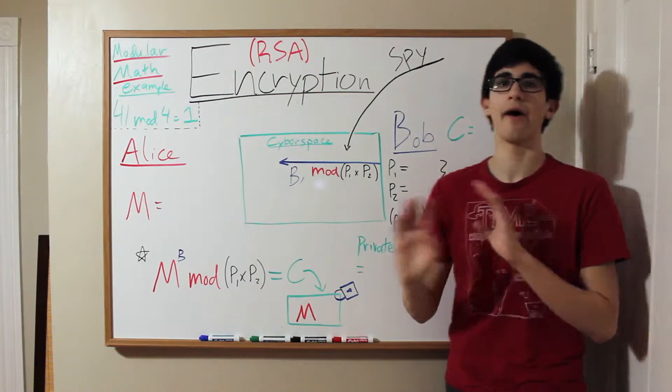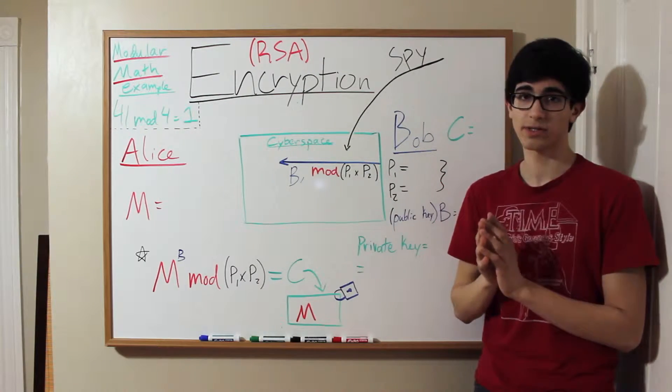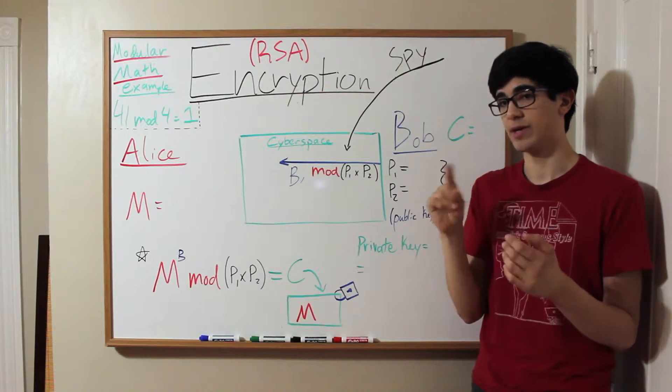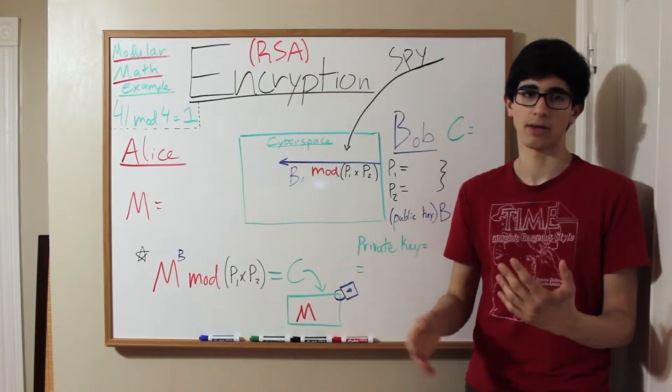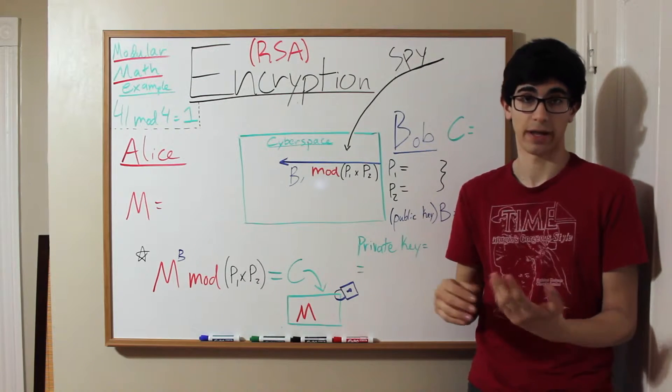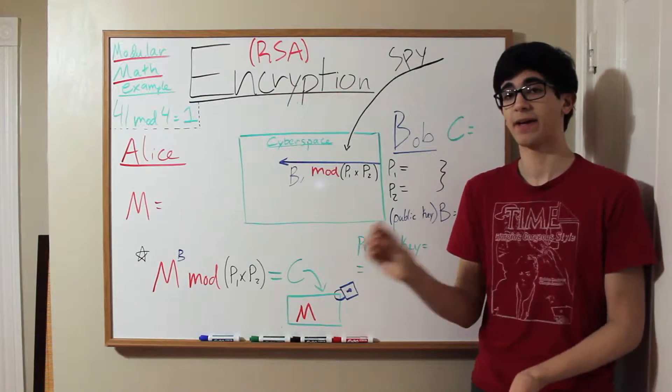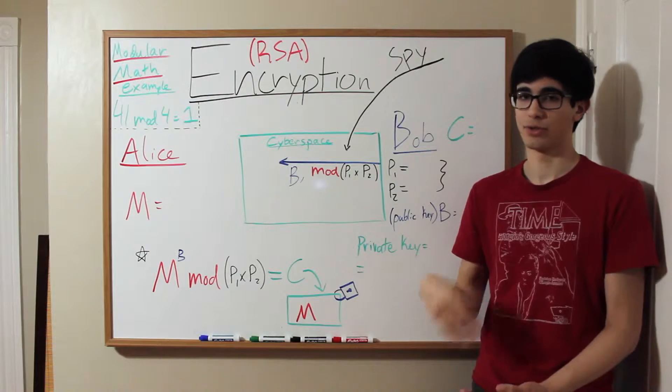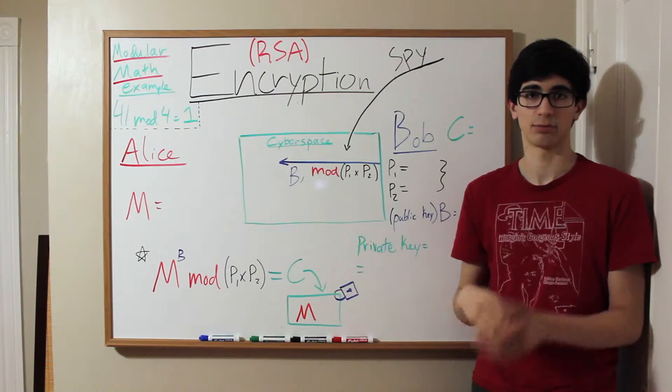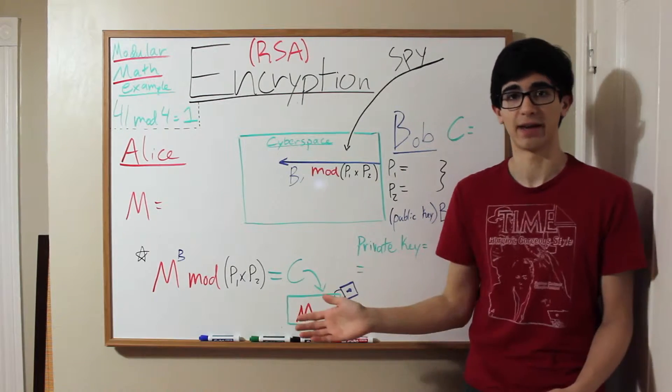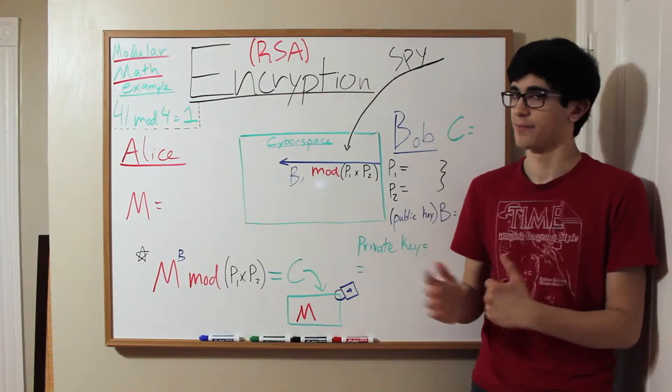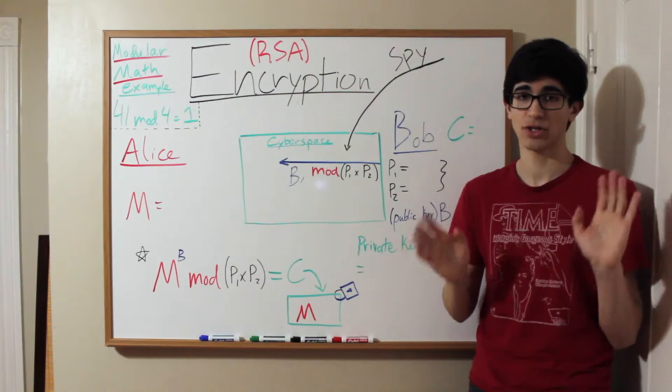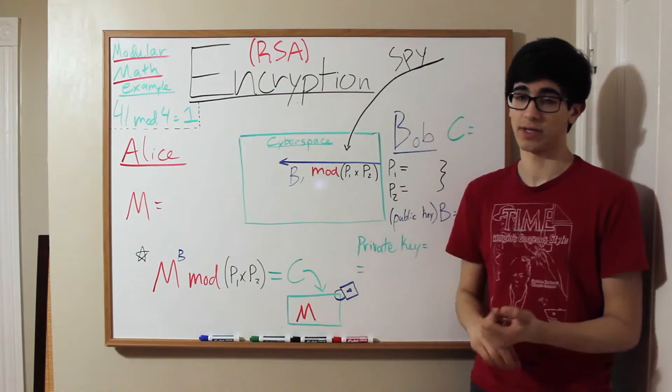So RSA encryption, whenever you use any internet source that begins with HTTPS, any website, anything that connects through the internet has to connect to a server. That connection to the server, to ensure that all the information is private, whether it's your bank account password or your Webkinz account password, it doesn't matter. Whatever it is, the connection has to be secured and that's usually through RSA encryption.